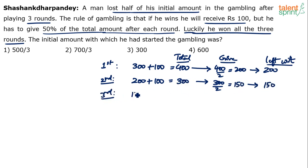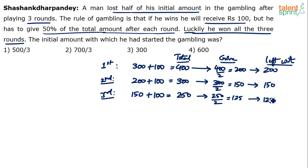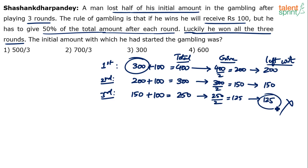Third round: he starts with 150, wins 100 rupees, making it 250. He gives half of 250 — that's 125 — and is left with 125. Is this satisfying the condition? No. The question says he lost half of his initial amount of 300, so he should be left with 150. But he's left with only 125 — he lost more than half. So 300 cannot be the answer.